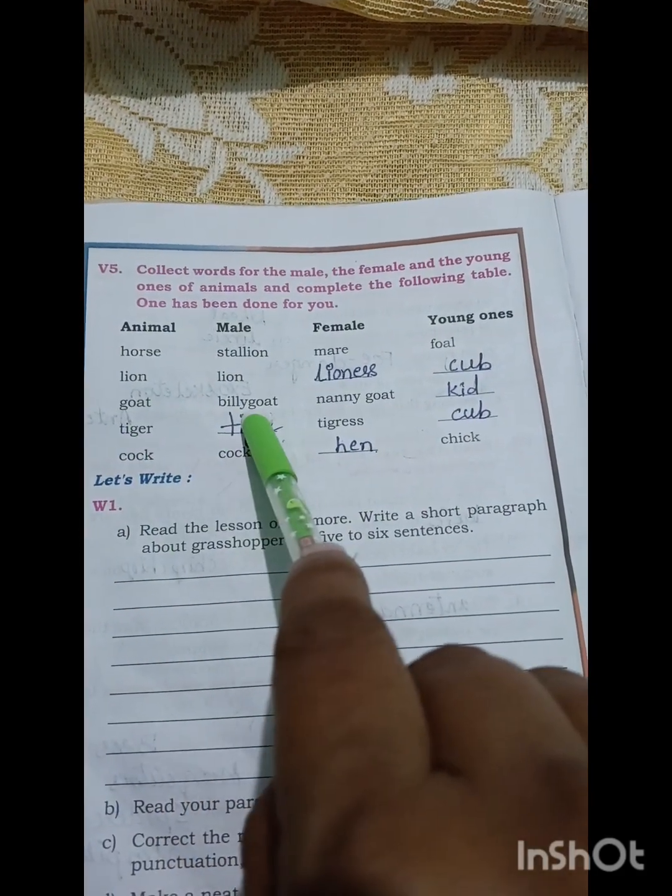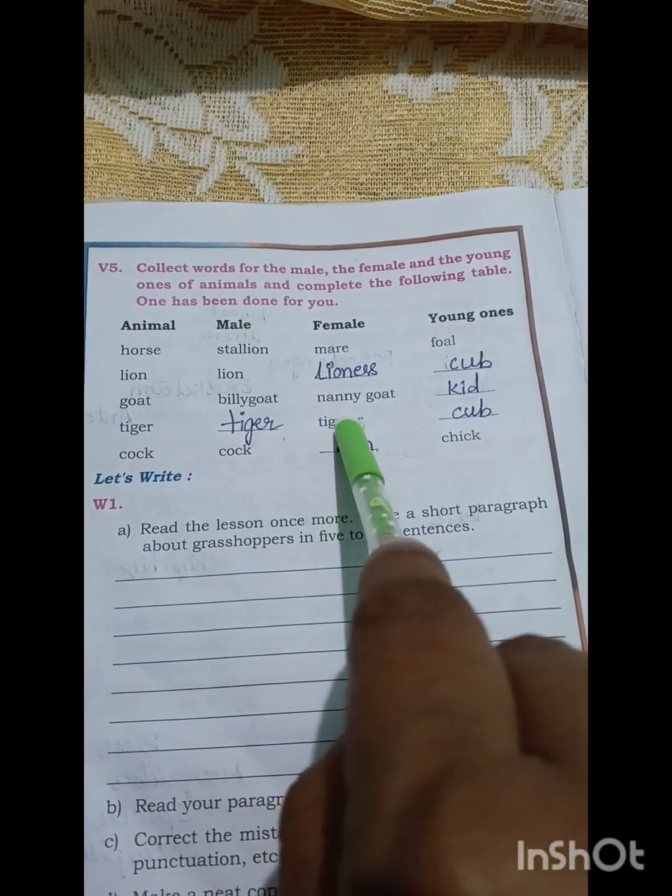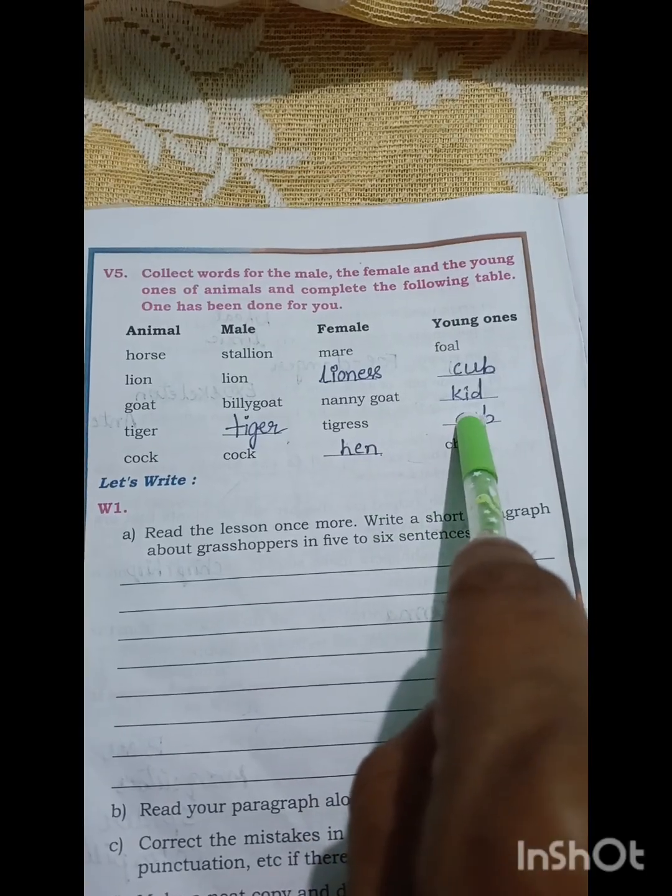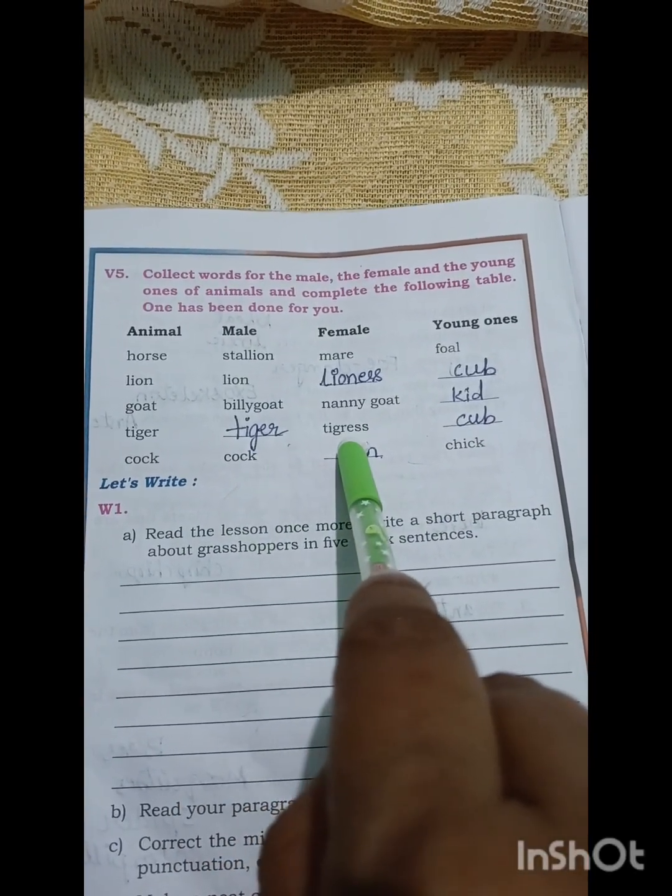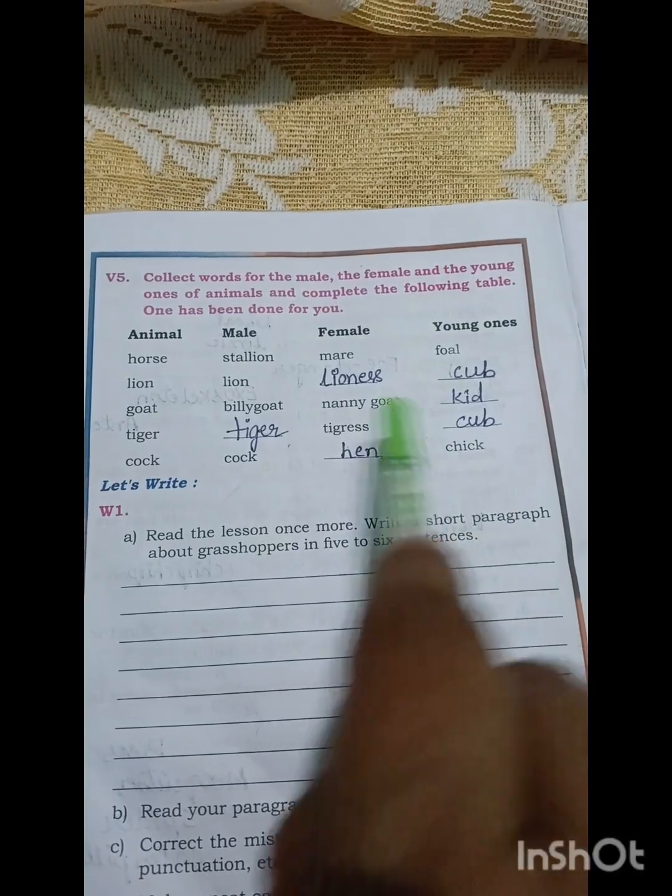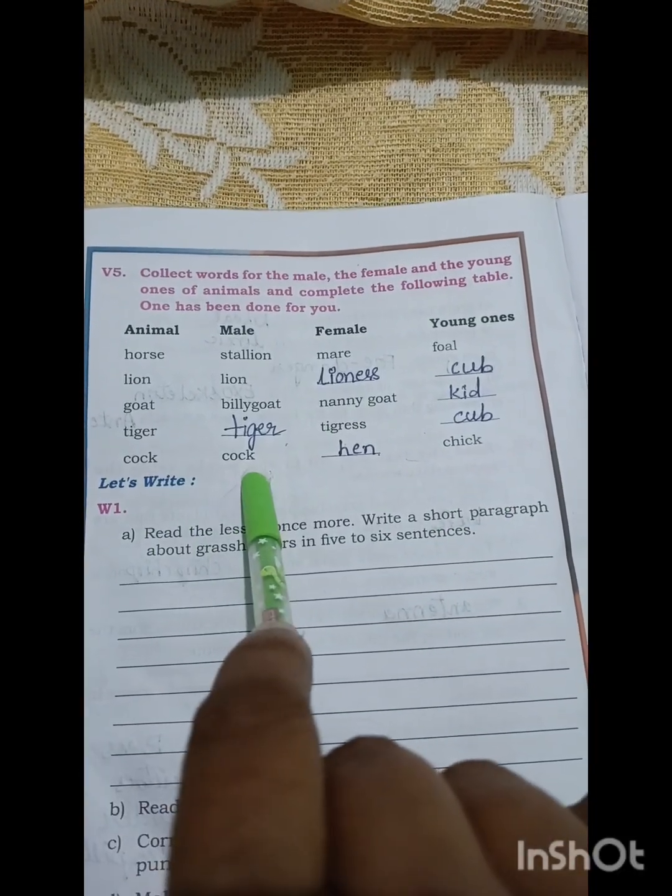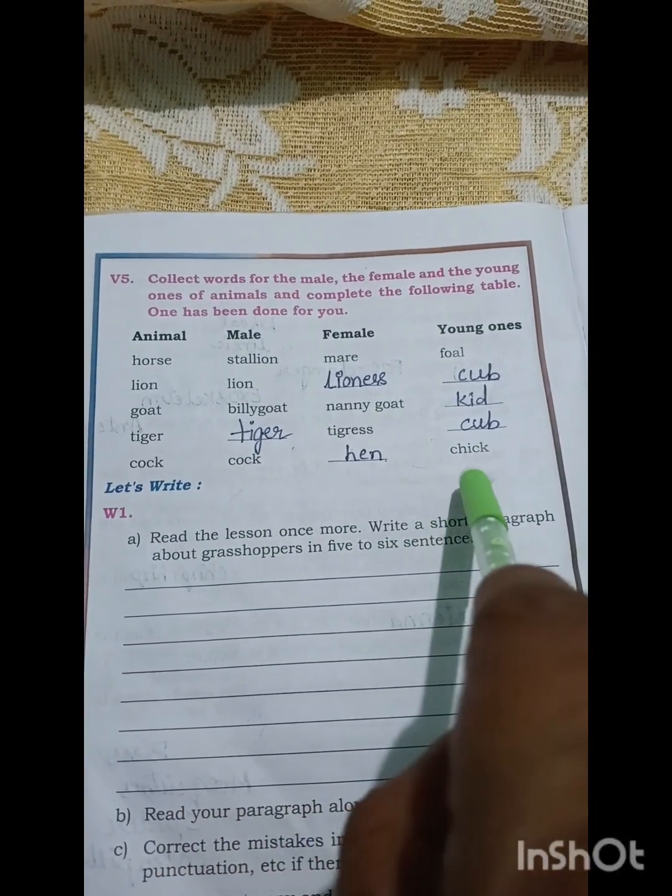Goat: nonnie, kid. Tiger: tiger, tigress, cub. Cock: cock, hen, chick.